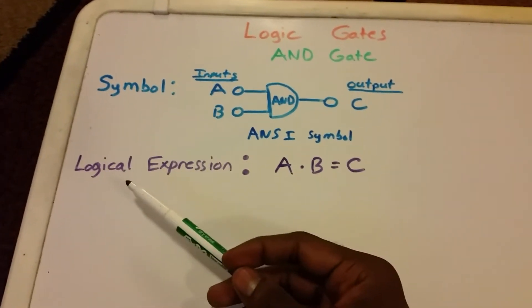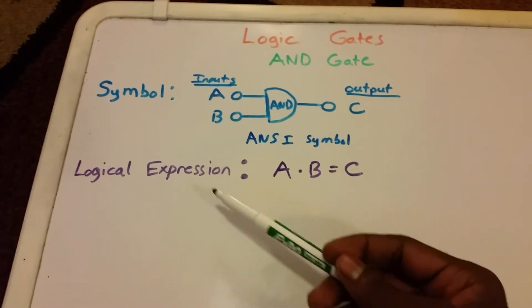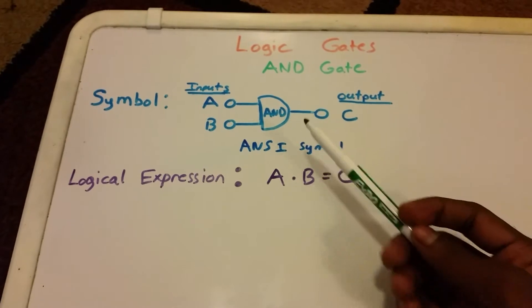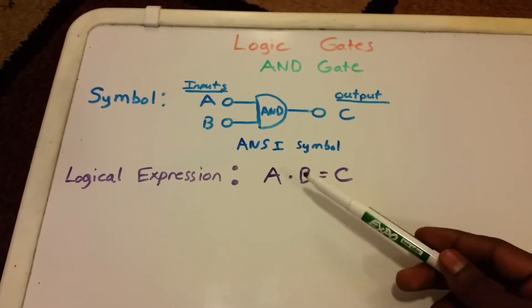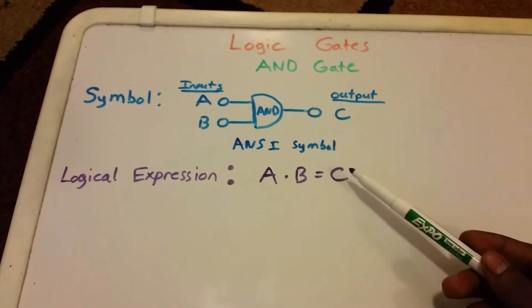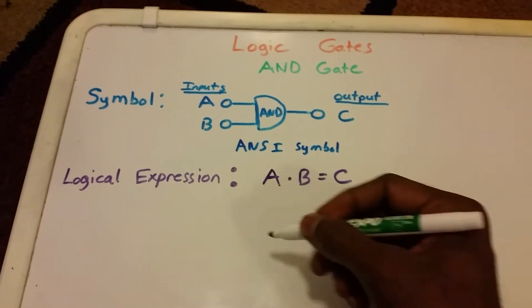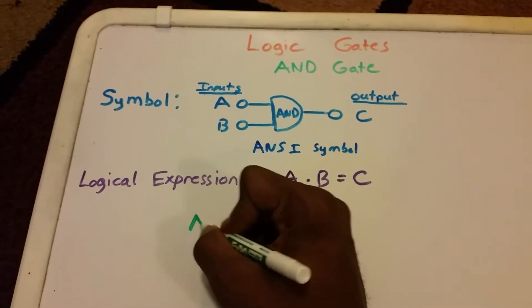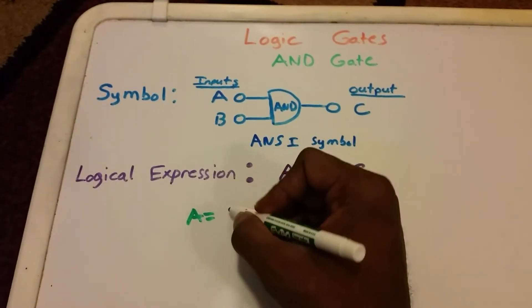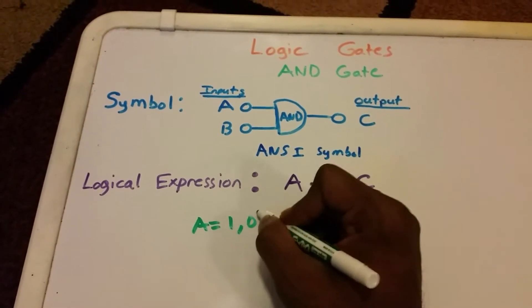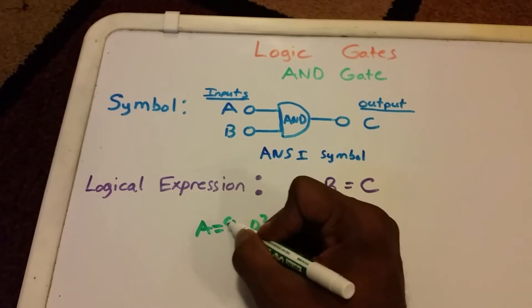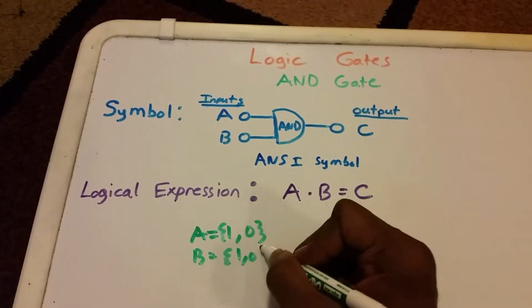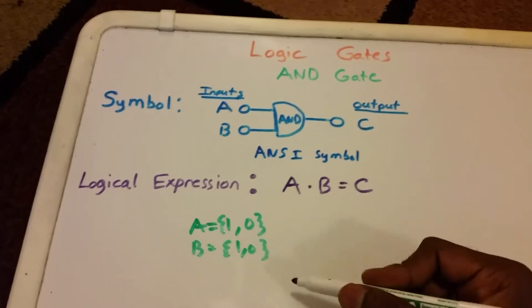Now, to calculate what the output's going to be, we can use a logical expression—specifically, this logical expression for this AND gate here where we can multiply A times B to get our value C. This is, of course, if the inputs for A are one or zero, and the same thing for B.